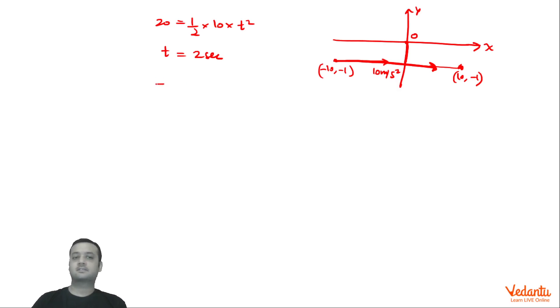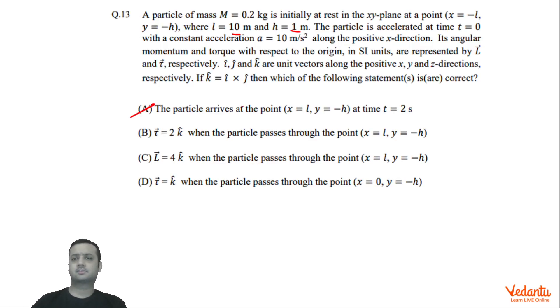So torque will be r cross F, so we can say that torque is fixed, that torque is independent of time in this case. Which we can say is the distance which is 1 into F. F we can write as mass into acceleration, and direction is k cap. R cross F, by right hand rule you can see, r vector anywhere you take it, if you take this side and F is this way, then r cross F, you can see the torque vector is pointing towards us. So this will be 2k cap anytime at any moment. So this is also correct, which makes this wrong.